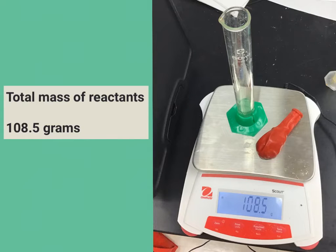Our next step is to find the total mass of our reactants. To do this, we will take the mass of the balloon with the baking soda in it and the test tube with the vinegar. So for our reaction, the total mass of our reactants is going to be 108.5 grams.